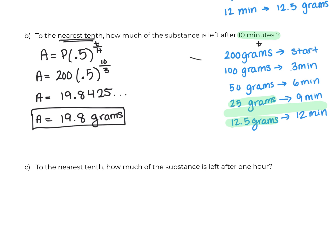So 19.8 is definitely a number that would be in between 25 and 12. So works for me.